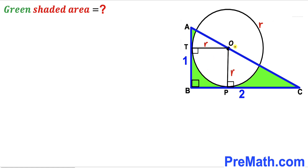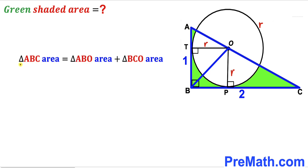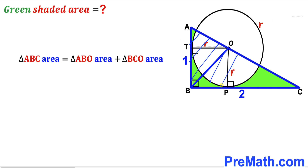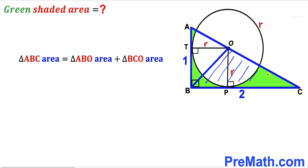Now I'm going to connect center O with vertex B. We can observe that the area of the big triangle ABC equals the sum of two individual areas: the area of triangle ABO plus the area of triangle BCO. So our task is now to calculate the area of triangle ABC, the area of triangle ABO, and the area of triangle BCO.